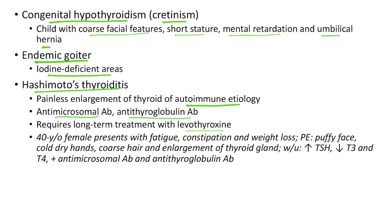Clinical case of Hashimoto's thyroiditis: A 40-year-old female presents with fatigue, constipation and weight loss. Physical examination shows puffy face, cold dry hands, coarse hair and enlargement of the thyroid gland. Workup shows elevated TSH, low T3 and T4, and positive anti-microsomal antibody and anti-thyroglobulin antibody. This is a classic case of Hashimoto's thyroiditis leading to hypothyroidism, showing all the features which we have discussed.